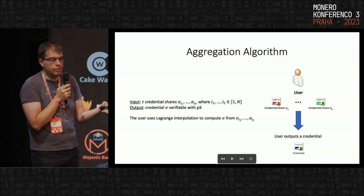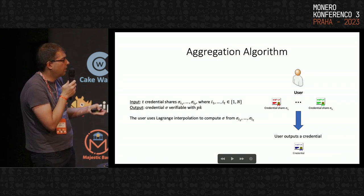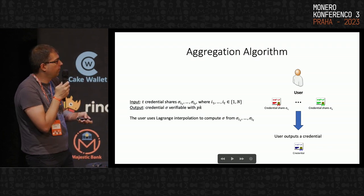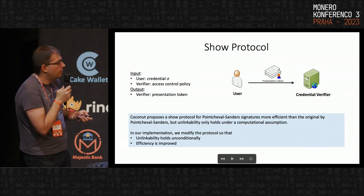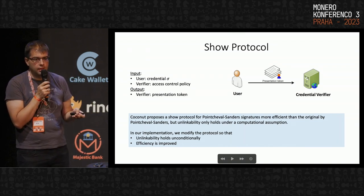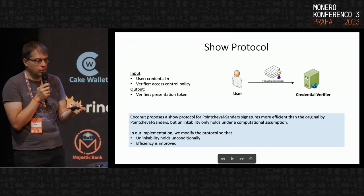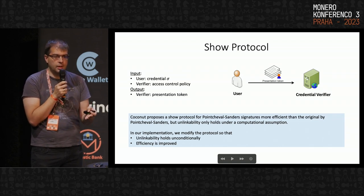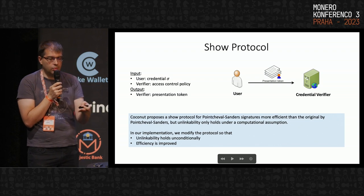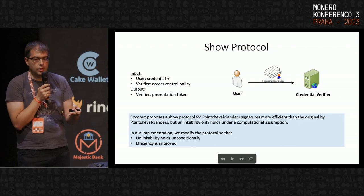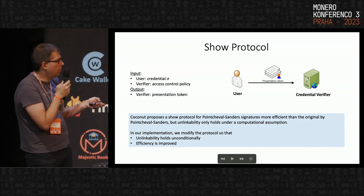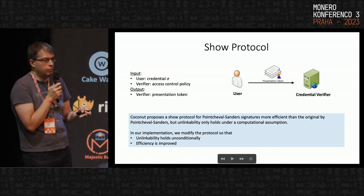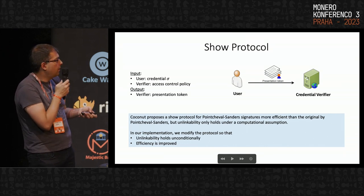After obtaining all credential shares — at least t of them — the user aggregates them into a credential verifiable with the system's public key using Lagrange interpolation, interpolating at zero to get the credential corresponding to the evaluation of the polynomials at zero. The show protocol was already present in COCONUT as an improvement over the original Pointcheval-Sanders paper, but its privacy held only under a computational assumption. We made a further modification so that unlinkability now holds unconditionally, and the zero-knowledge property is unconditional, with a small improvement in efficiency as well.